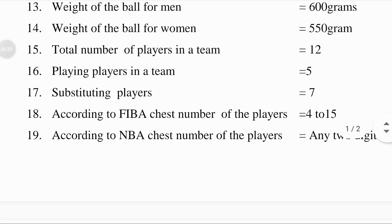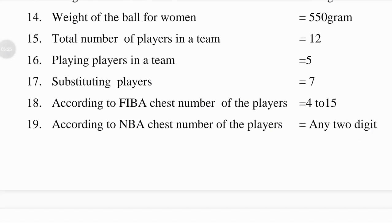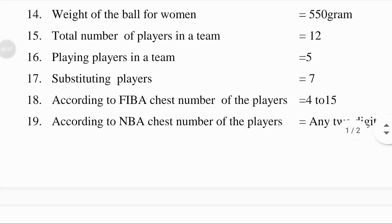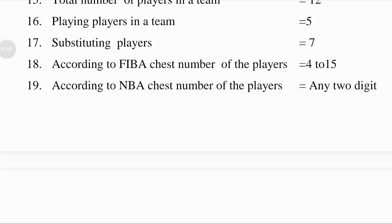Total number of players in a team means the complete number of players taking part in a side or squad; that is equal to 12. Playing players in a team means the players actively taking part in the game; that is equal to 5. Substituting players means the exchange of players taking part in the game; that is equal to 7.